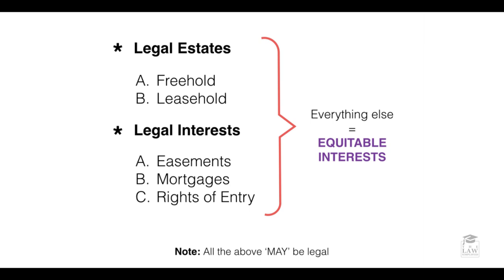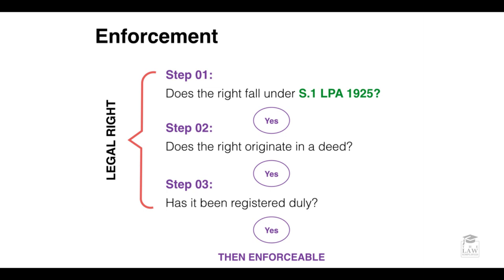In relation to enforcement of these rights, there are three steps that must be adhered to. Firstly — and this involves one of the most pivotal acts within the UK's legal system, the Law of Property Act 1925 — the first step is to gauge whether the right in question falls within section one of the LPA 1925.